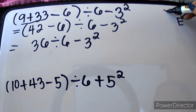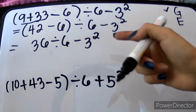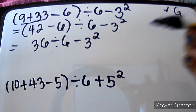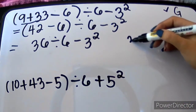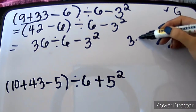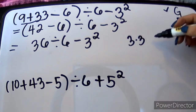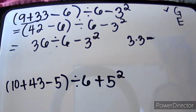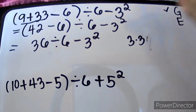We're done with letter G. We will proceed to letter E. Wala na tayong grouping symbol, kaya titignan na natin kung may E. And obviously, we have E which is 3 squared. 3 squared means 3 times 3 — hindi po 3 times 2. Which will give us 9.